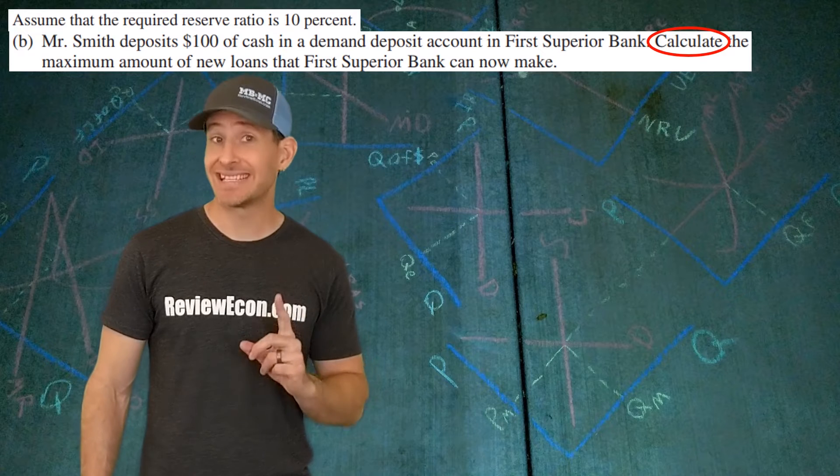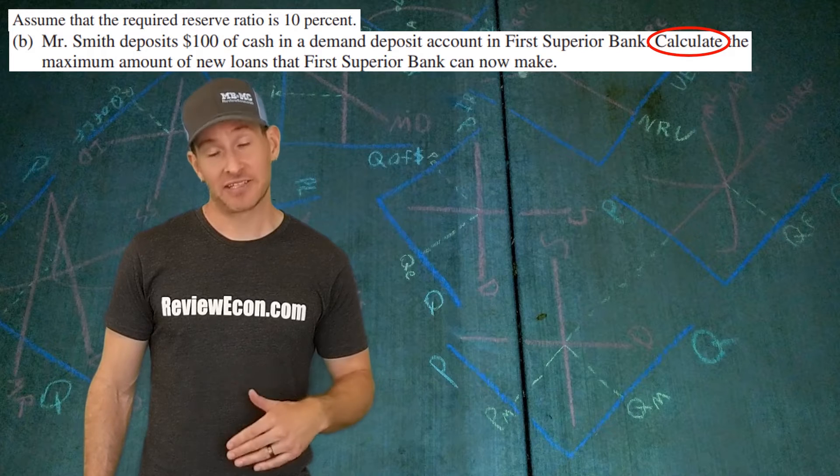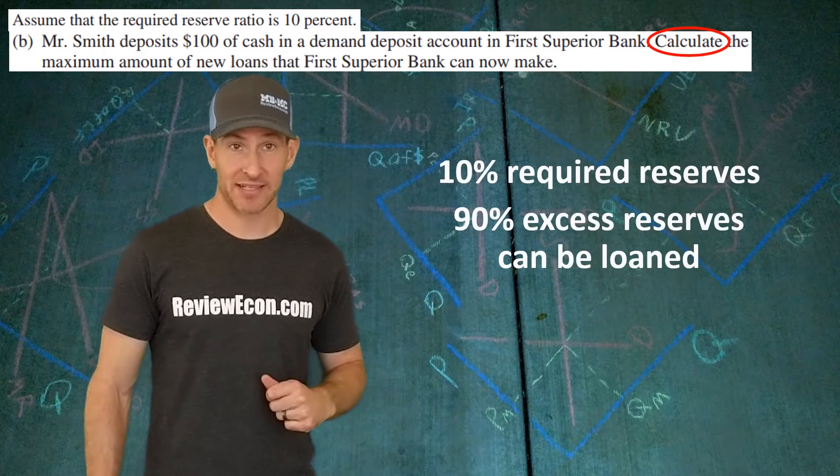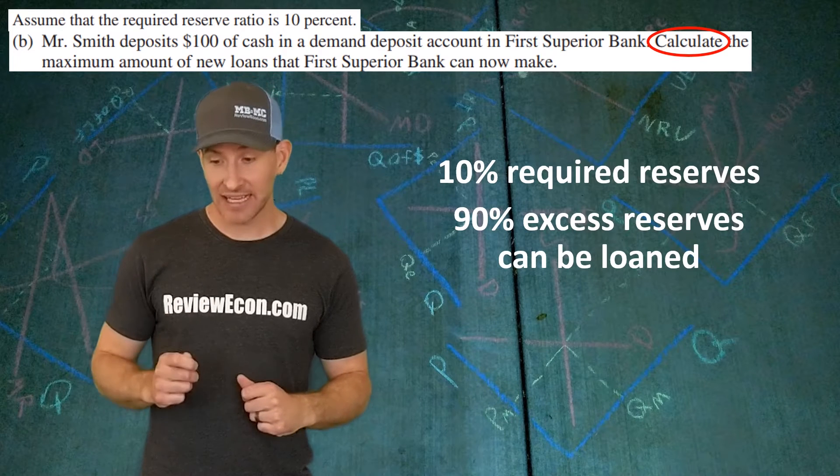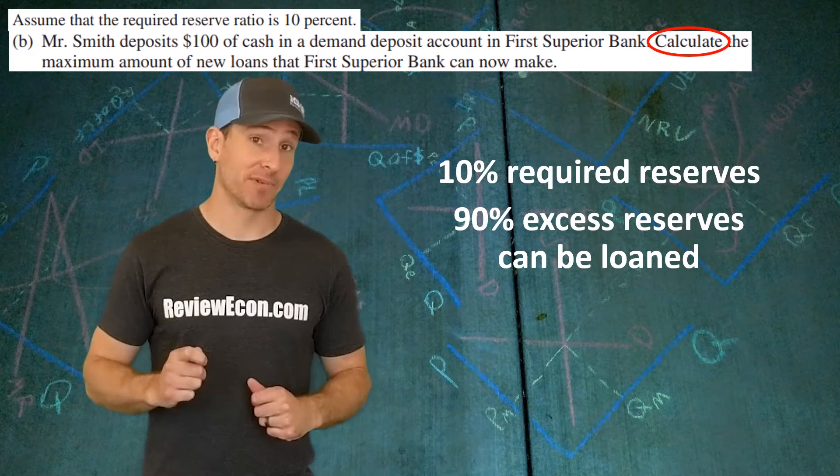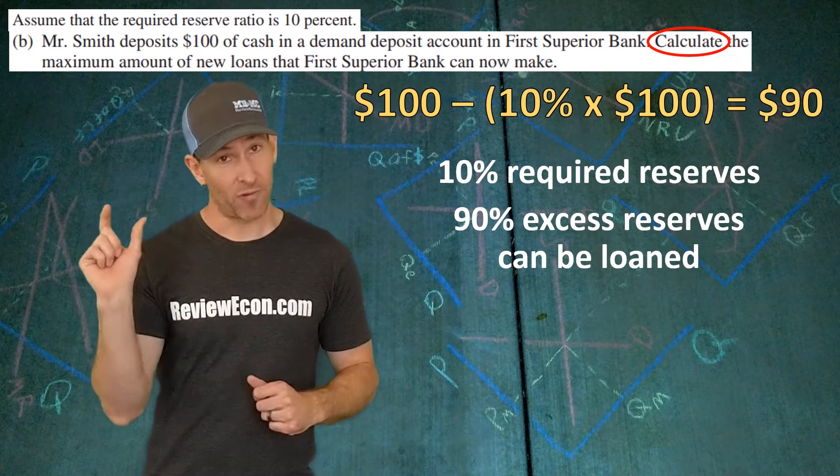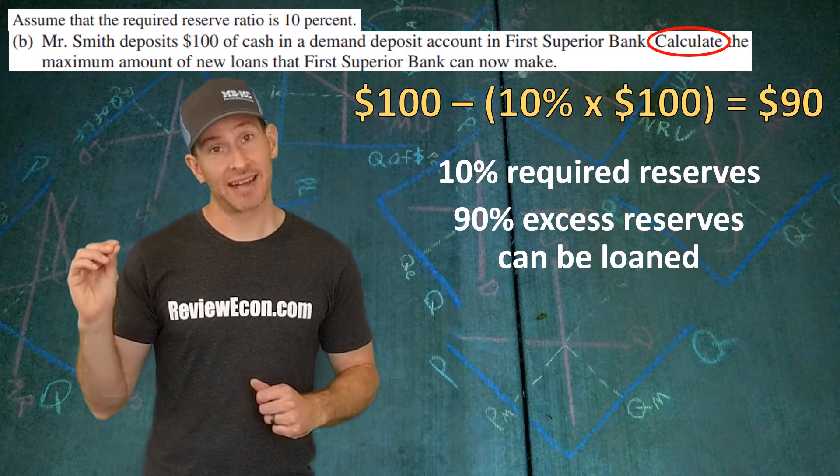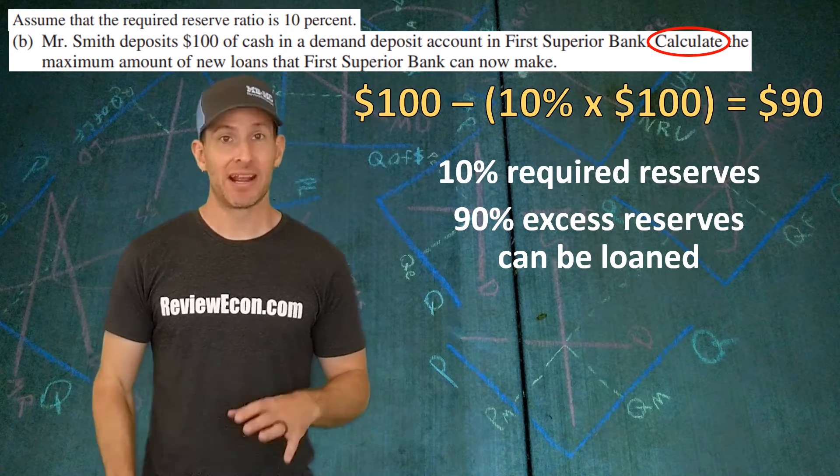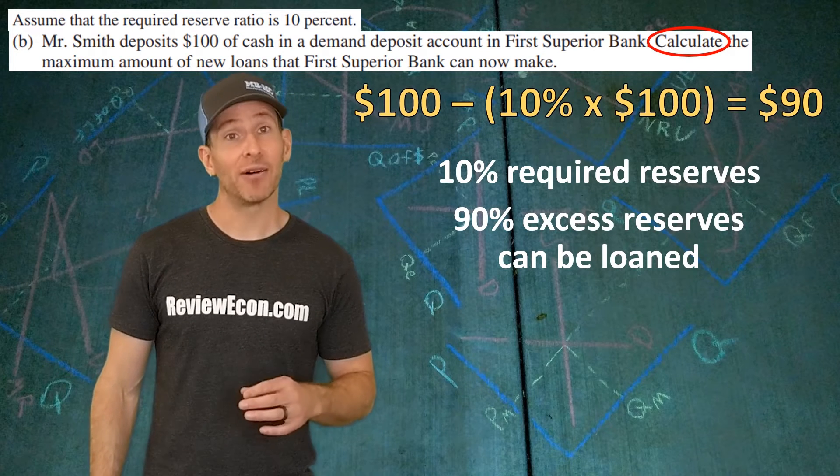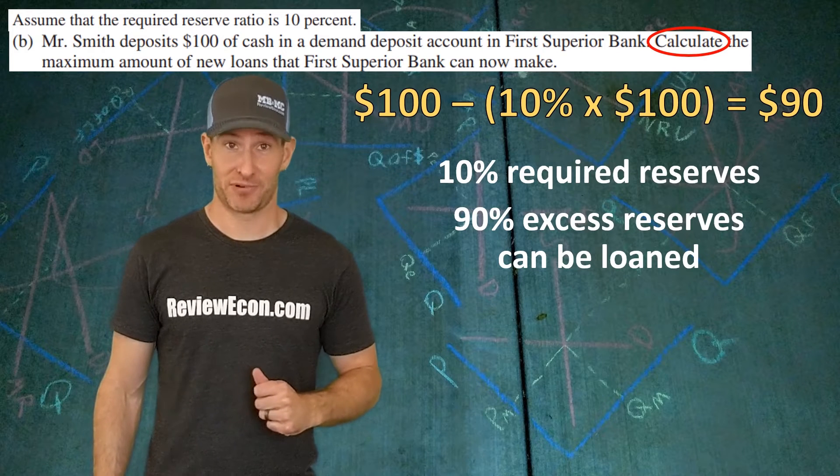In order to figure that out, we're going to take the $100 deposit and subtract the 10% reserve requirement. That leaves us with 90% that can be loaned out. Here, you're going to want to show the math. You take the $100, subtract the 10% times that $100, and that gives you $90 that First Superior Bank can loan out, thanks to this deposit. You show your work here, and now you get your point.